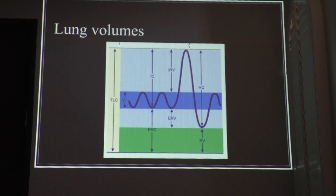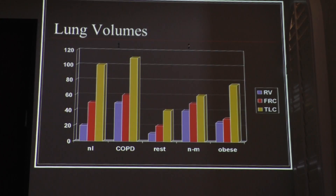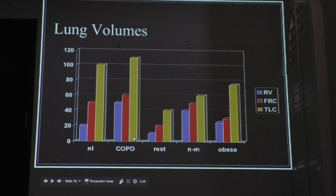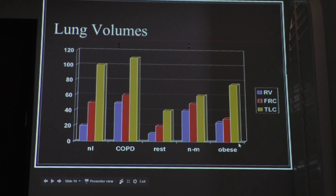Are you all familiar with this graph? Good. This is a normal individual, this is COPD, this is a patient with a restrictive pattern, a neuromuscular pattern, and an obese patient. If you look at these three, more or less they look similar — the total lung capacity is diminished compared to a normal individual, and the residual volume is normal or increased. The FRC — functional residual capacity — is similarly decreased in the restrictive pattern.